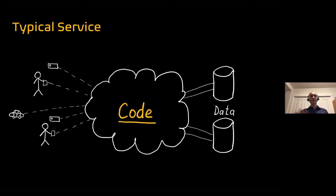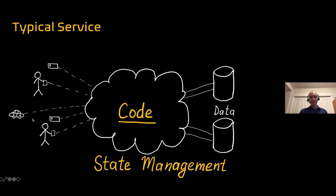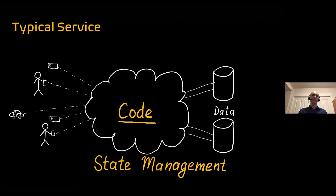In between there is this mushy, not well-defined thing where we run our code — that's where we live as developers. From that altitude, what the code does, I would argue, is state management. State is just a fancy word for data. So what code does is manage data one way or another. It receives requests, processes them, and manages data. That's why the title for this talk is 'Affairs of State.'